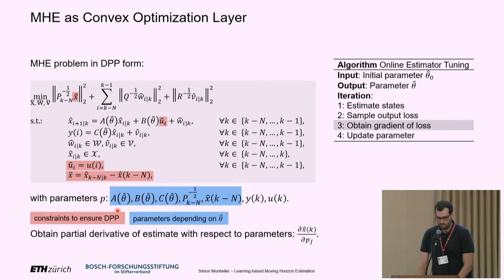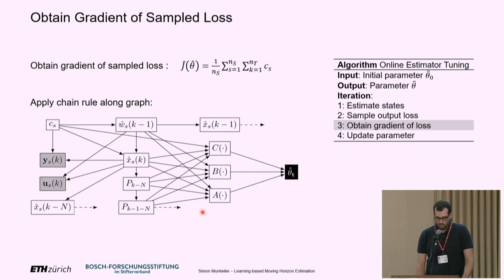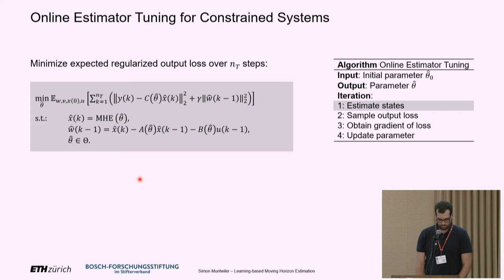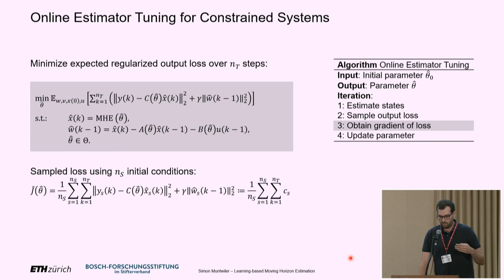After formulating our MHE as a differentiable optimization layer, we obtain the gradient of our output loss through automatic differentiation along the computation graph for each cost term in our sampled objective. The cost term contains the state estimates depending on our system model, and we differentiate through the MHE problem. To summarize the overall algorithm: estimate state with some initial parameter, sample an output loss, obtain the gradient of the loss with respect to the parameter through automatic differentiation, then update the parameters using projected stochastic gradient descent.